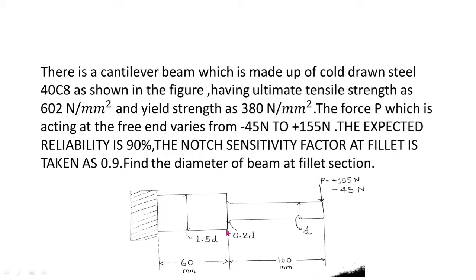We will solve this problem in a step-by-step manner. This problem will consist of 3 steps. In step number 1, we will calculate the corrected endurance limit. In the next step, we will construct the modified Goodman diagram, and in the last step, we will solve the numerical problem using that modified Goodman diagram and find out the diameter at the fillet section.